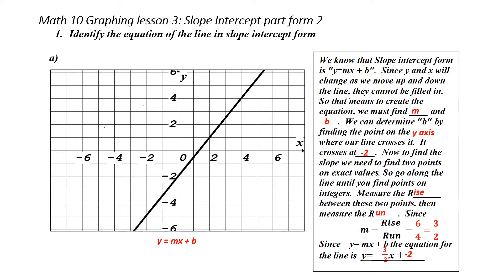I need to find my slope, and I need to find my y-intercept. To start with, my y-intercept is the point where my line crosses the y-axis. So I go down my line until I hit the y-axis. In this case, my y-intercept is negative two.